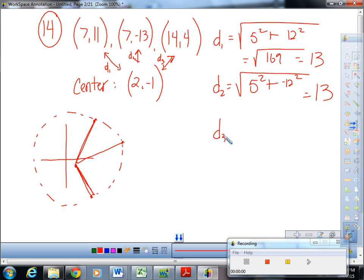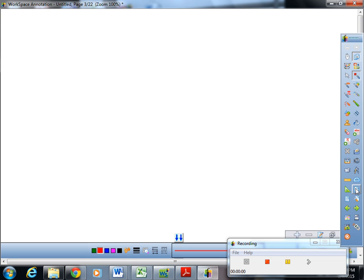Okay, D3 is the square root of 12 plus 4 minus a negative 1 is 4 plus 1. So it's 12 squared plus 5 squared. And we have just shown, since D1 is equal to D2 is equal to D3, then those three points must lie on some circle whose center is 2, negative 1.